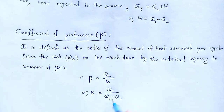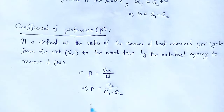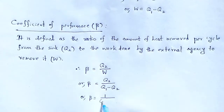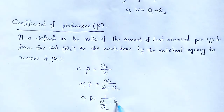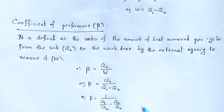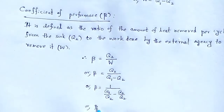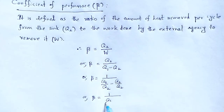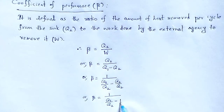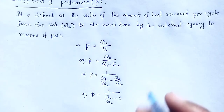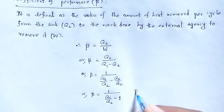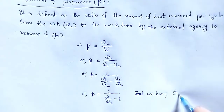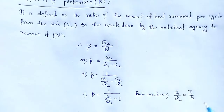Dividing numerator and denominator by Q2, beta is equal to 1 divided by (Q1/Q2 minus 1). We know that Q1/Q2 is the same as T1/T2.